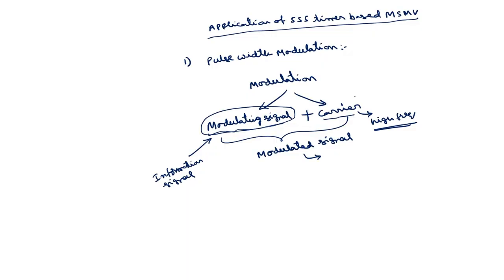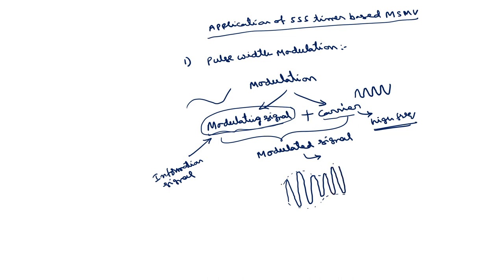In case of continuous wave modulation techniques, the carrier is a high frequency sine wave and the modulating signal is a low frequency signal. If we combine these two in case of amplitude modulation, the modulated signal you get has the actual information present in the envelope. This is the actual information signal but it is low frequency, whereas the carrier is high frequency. Both combined together is called the modulated signal — this is the amplitude modulated signal.